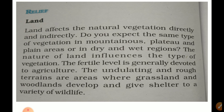Land affects natural vegetation directly and indirectly. The topography of the land varies from place to place, from one region to another region, because the physical divisions of India are varied. India has several major physical divisions.